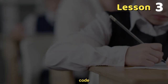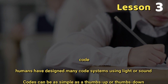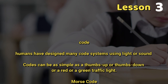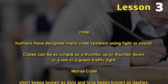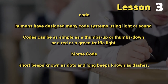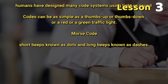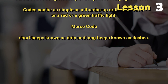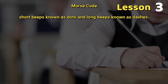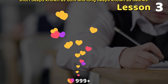Now repeat after me: Code. Humans have designed many code systems using light or sound. Codes can be as simple as a thumbs up or thumbs down or a red or a green traffic light. Morse code: short beeps known as dots and long beeps known as dashes.